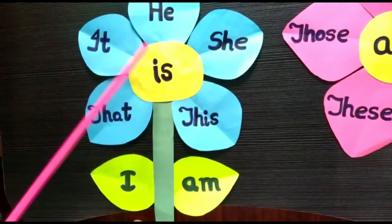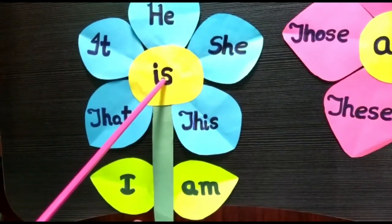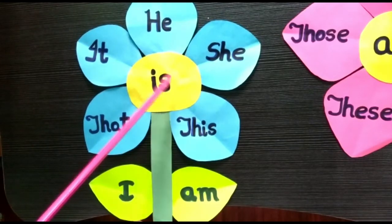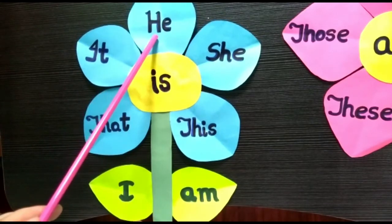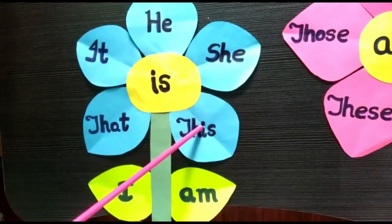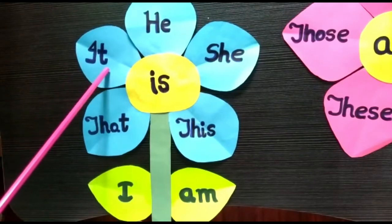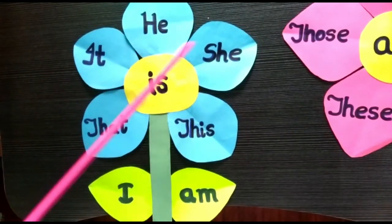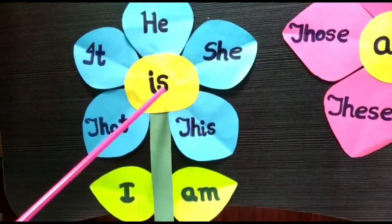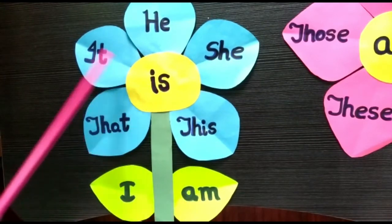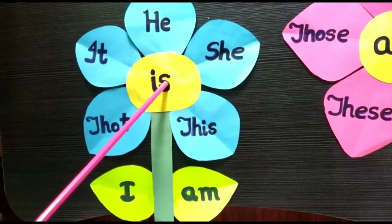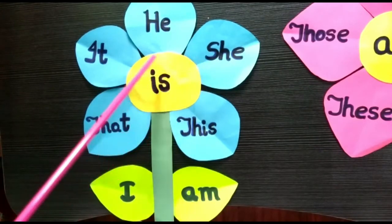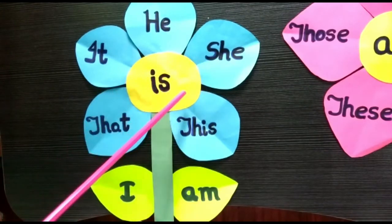Now, Is has how many best friends? Is has five best friends. They are He, She, This, That and It. So we use He is, She is, This is, That is, It is. Is is used only for singular nouns.